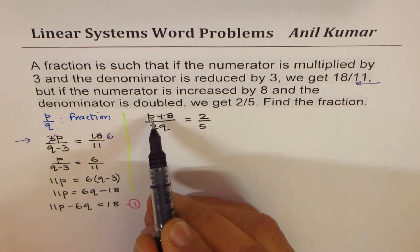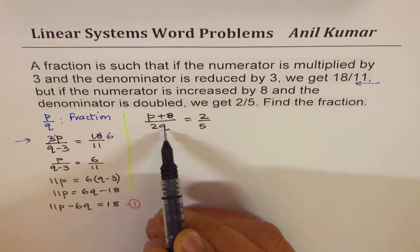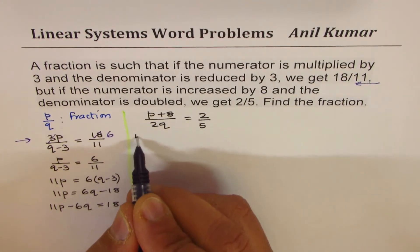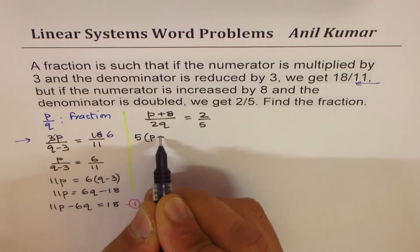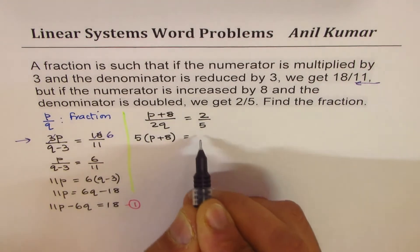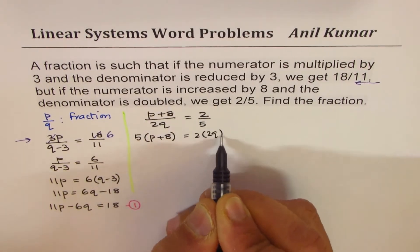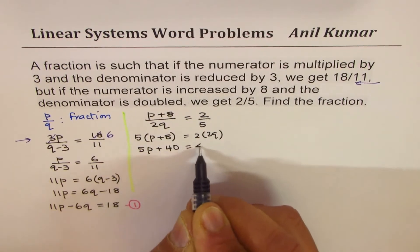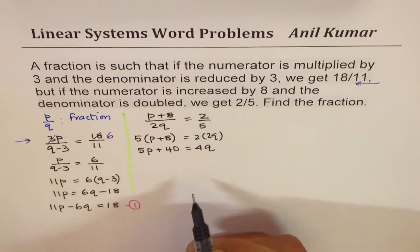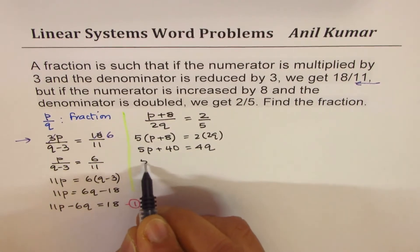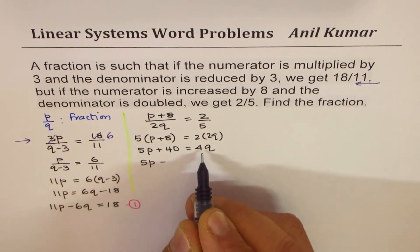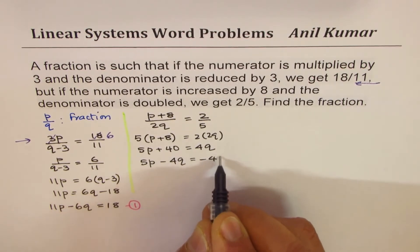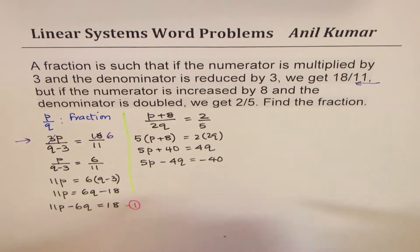So I increase the numerator by 8, twice denominator is 2 over 5. Now let's cross multiply. So we have 5 times p plus 8 equals to 2 times 2q, which is 5p plus 40 equals to 4q. Let's bring them together as we did here, which is 5p minus 4q equals to minus 40. So we get our second equation.